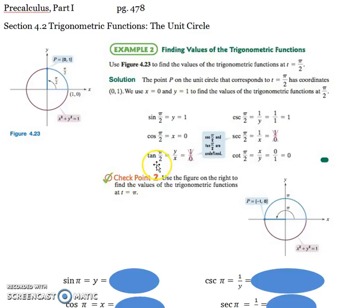The tangent, remember, is sine over cosine, or y over x. So 1 over 0, we can't have 0 in the denominator, so that is undefined.